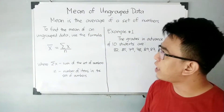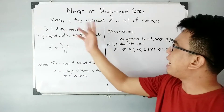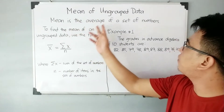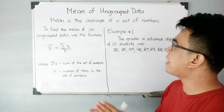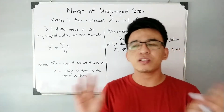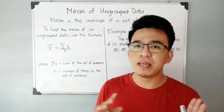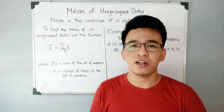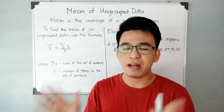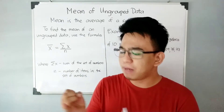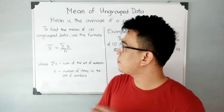So, how do we define mean? Mean is the average of a set of numbers. Again, mean is the average of a set of numbers. In layman's term, just think of the mean as the average of the given data set — para mas madali mong tandaan — because median and mode have different definitions.